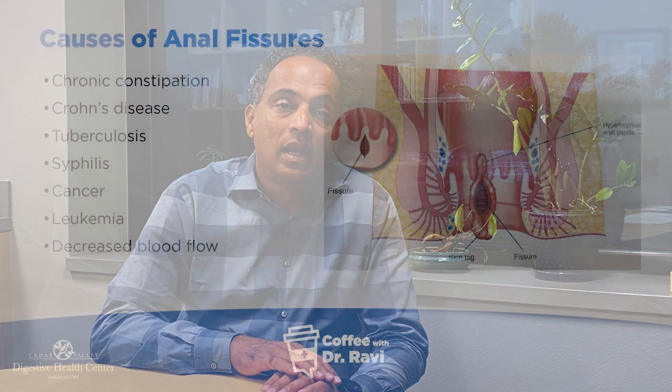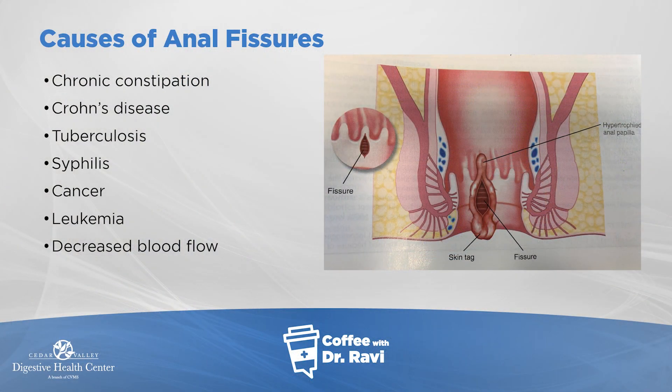The nerve endings supplying the anal canal are more like skin nerve endings, so we feel pain with those kinds of injuries. In an anal fissure, probably because of constipation or some kind of trauma, hard stool pushes out and causes a break. The blood supply to that area starts going down partly because the surrounding muscle goes into spasm, and the combination of spasm and decreased blood supply after the cut means the area doesn't heal.